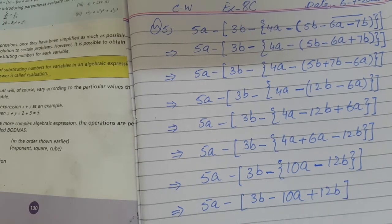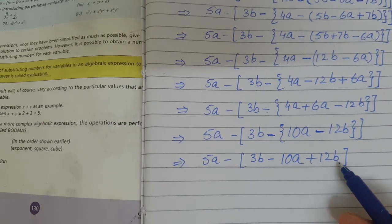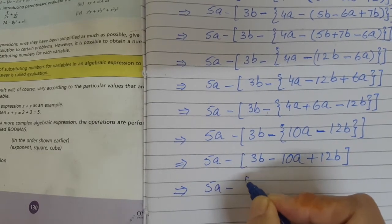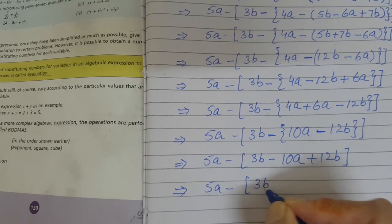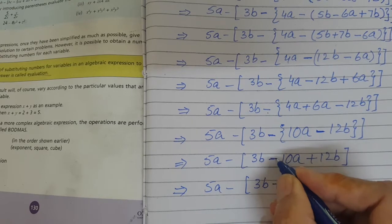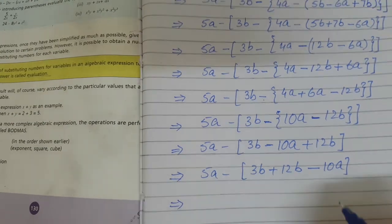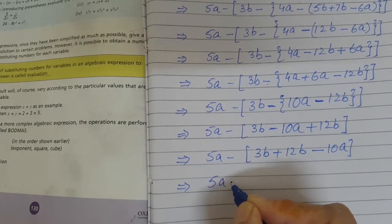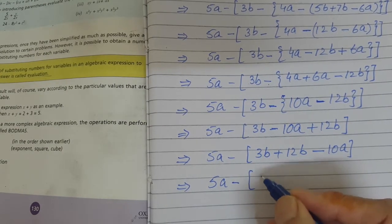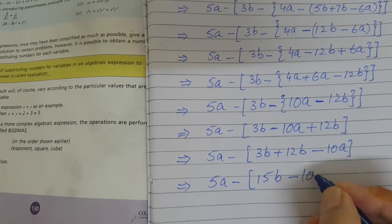Now we are left with only the square bracket. Inside the square bracket, two like terms with variable b are there. We arrange them and solve them first: 3b plus 12b, and minus 10a. Now take out both terms. Inside the square bracket, 3b and 12b — both are positive — gives 15b, minus 10a.